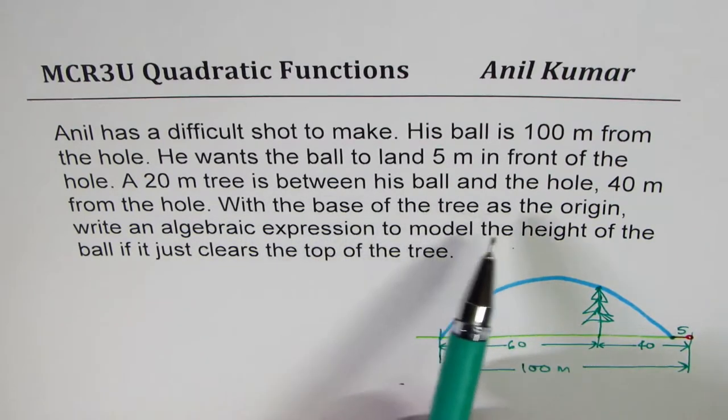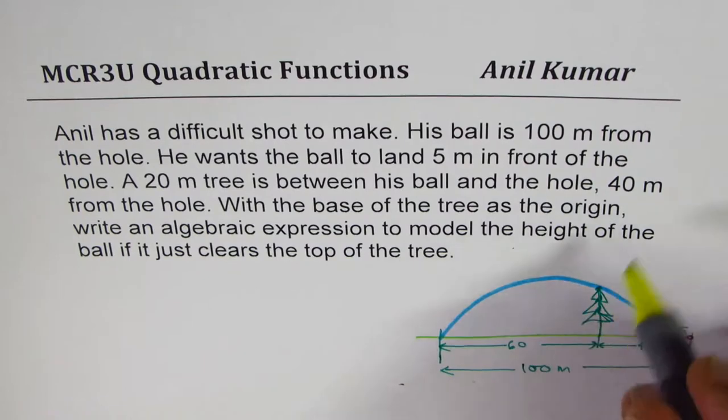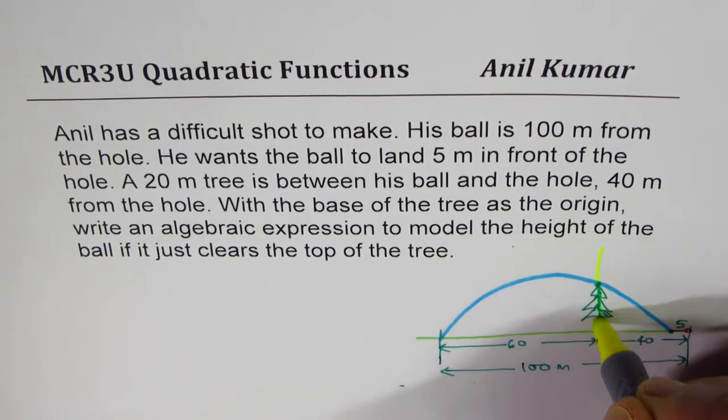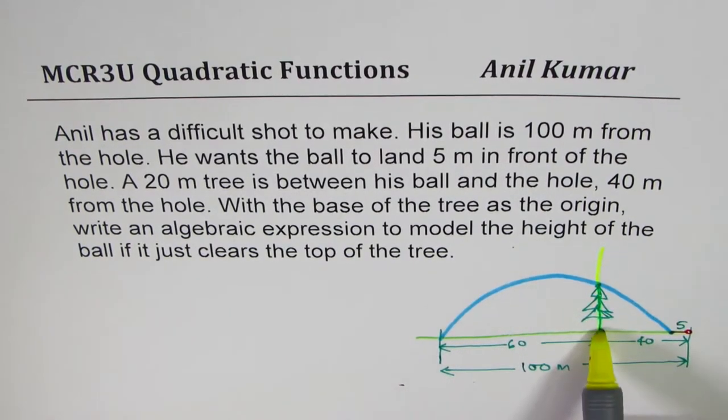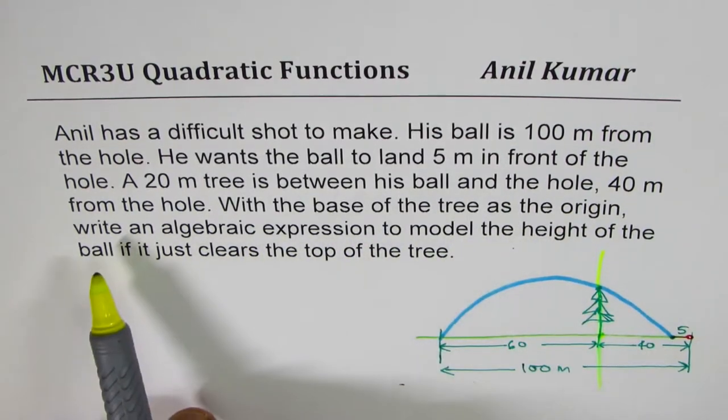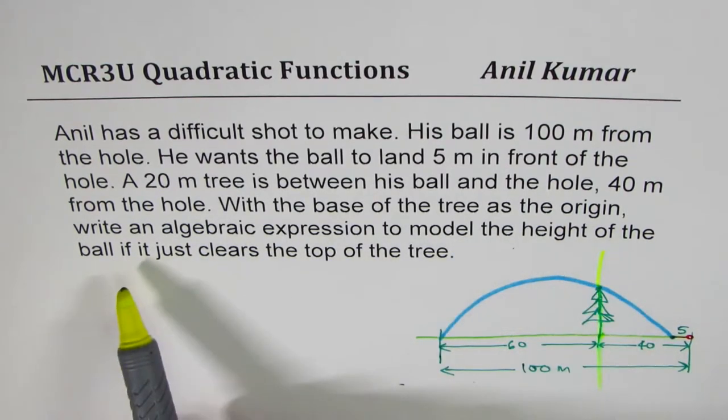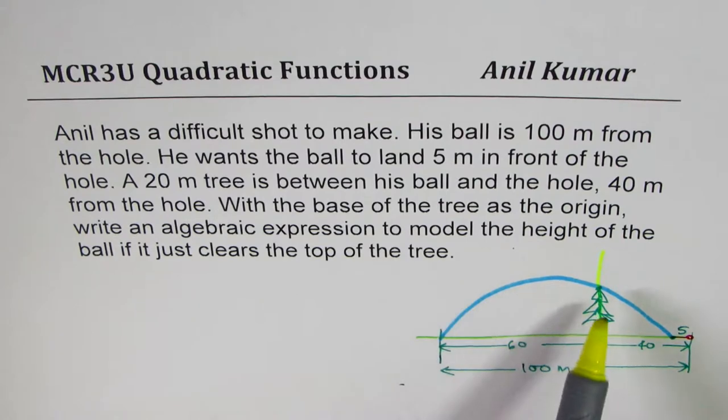With the base of the tree as origin. So what we want here, we have no choice, but we have to use this base as the origin. With base of the tree as the origin, write an algebraic expression to model the height of the ball if it just clears the top of the tree.